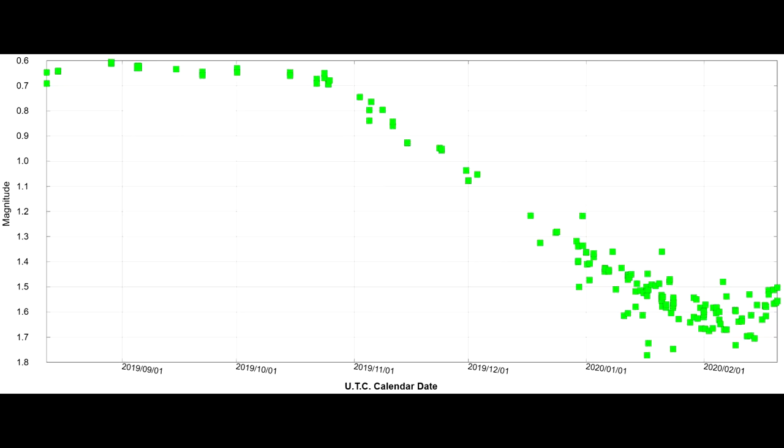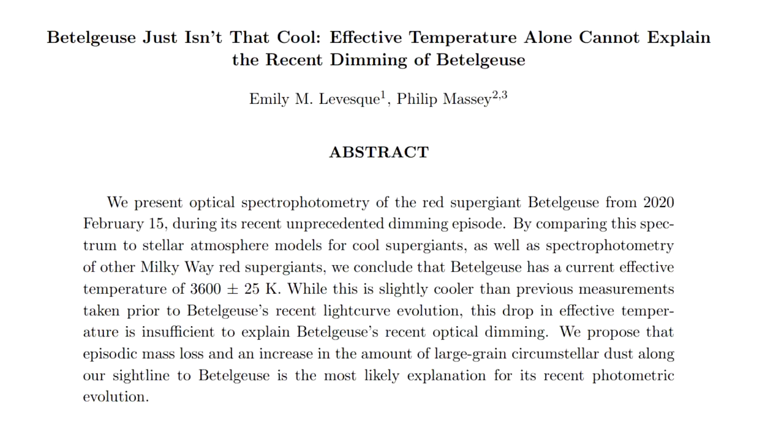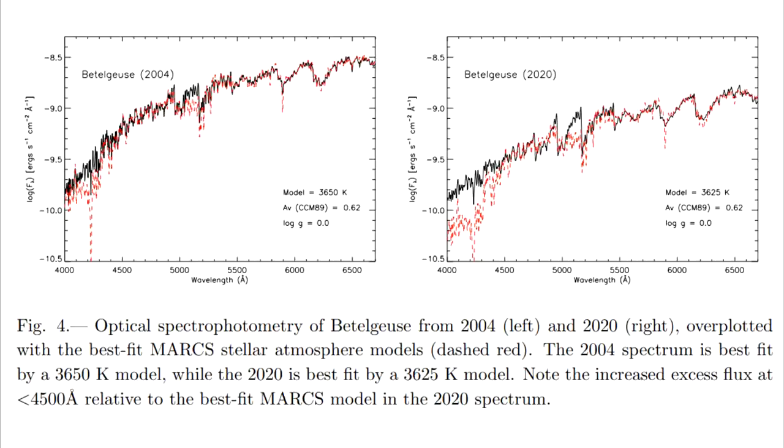Which of course brings us back to the title of the paper, which is, Betelgeuse just isn't that cool. Effective temperature alone cannot explain the recent dimming of Betelgeuse. But the team thought the spectrum does give them a clue as to what is causing the dimming.